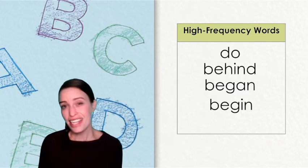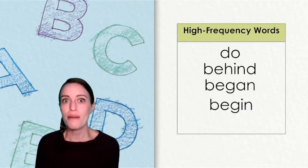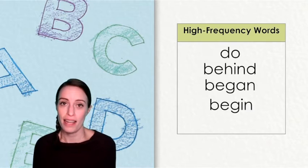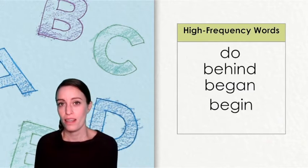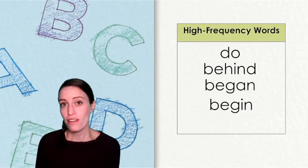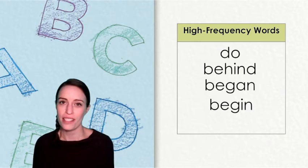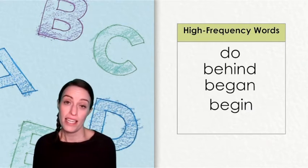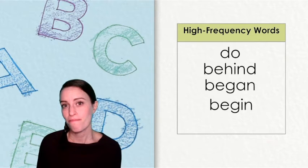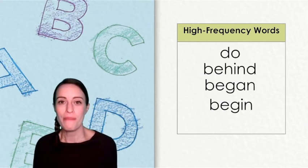And our next high frequency word also plays fair. It has the same open syllable at the beginning. Be. You'll hear that long vowel e. The second syllable, gin, is closed. So the i has a short vowel sound. If we put those syllables together, be, gin, go ahead and say it. Begin.